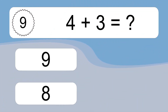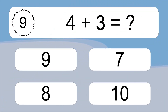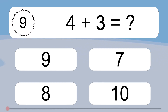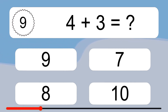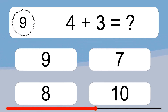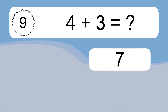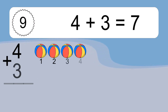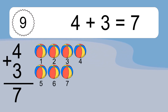4 plus 3 equals what? 4 plus 3 equals 7.